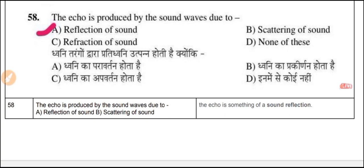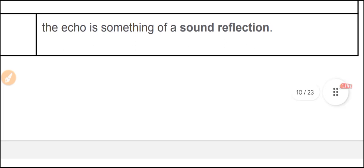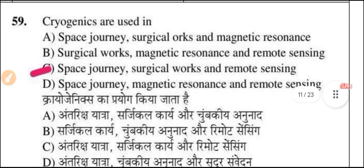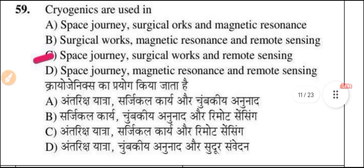Question 58: Echo is produced by sound waves due to the reflection of sound. An echo is a reflection of sound. Question 59: Cryogenic engines are used in three applications: space journeys, surgical work, and remote sensing. Remember — space journey, surgical work, and remote sensing are the three applications of cryogenic engines.